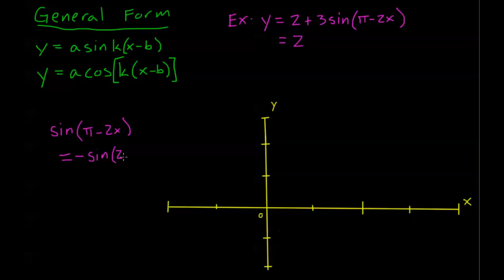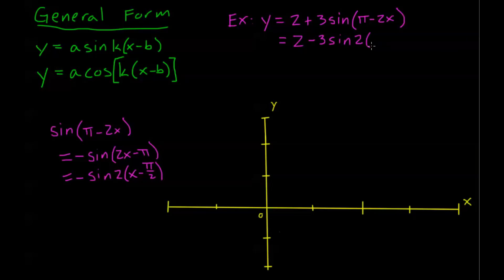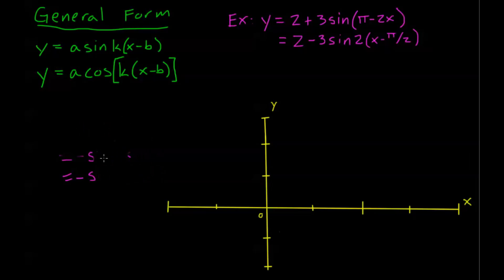So I have negative sine of 2x minus pi. Now x is positive, and all I need to do is factor out that 2. So that's going to be negative sine of 2 times x minus pi over 2. A common mistake is to factor out this coefficient of x and forget to factor it out of the other term as well. Remember, we have to factor out that 2 from the entire thing. So our equation becomes y equals 2 minus 3 sine of 2 times x minus pi over 2. We're in our general form now.